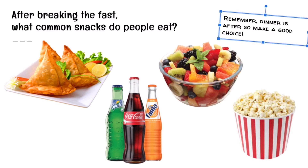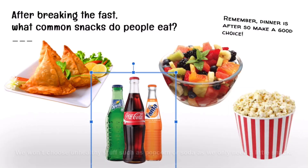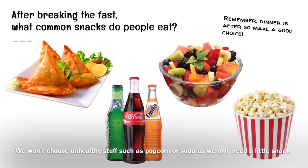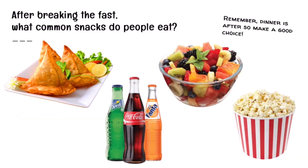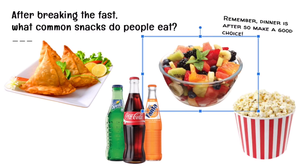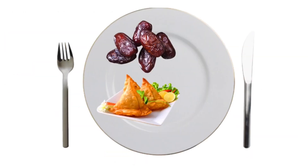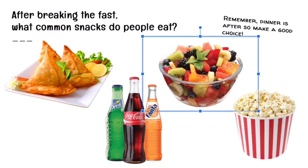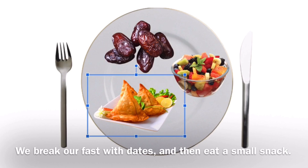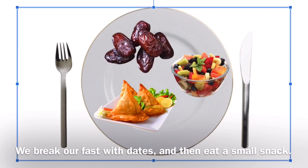Next, after breaking the fast, we eat some snacks. Most of us actually eat samosas or fruit chaat, and we can't use all the unhealthy stuff because we don't drink soda or have popcorn — stuff like that. That is not part of the normal iftar meal. So I'm going to get samosas on my plate and fruit chaat, because these are both healthy and good things to eat at this time. So we break our fast with the dates and then we eat a small snack.